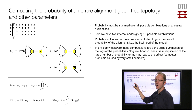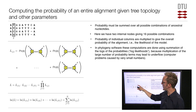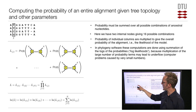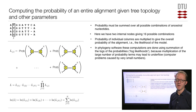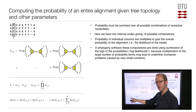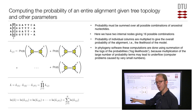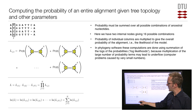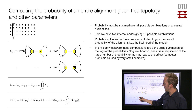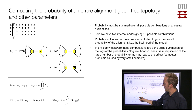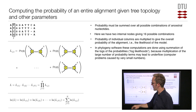We can now do the same for all remaining columns in the alignment. Each column gives a separate likelihood value, where we substitute the nucleotides for that particular column. The overall likelihood of the entire alignment is found by making the additional assumption that every position in the sequence evolves independently. Independent probabilities are combined by multiplication — so the overall probability of the alignment is the product of the likelihoods for each column, which can be written as the product from column one up to the total number of columns.